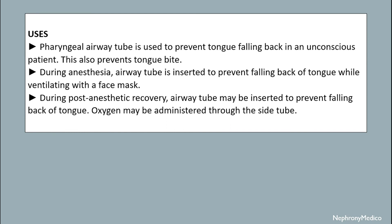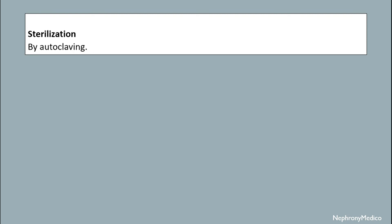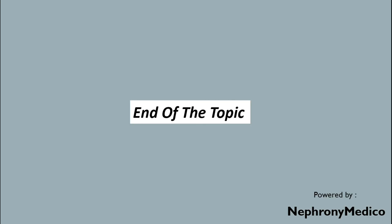During post-anesthetic recovery, the airway tube must be inserted to prevent falling back of the tongue. Oxygen may be administered via the side tube. Sterilization is done by autoclaving. End of the topic.